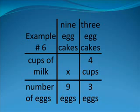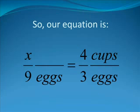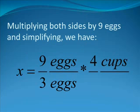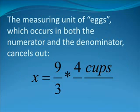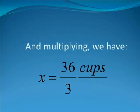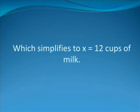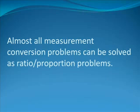Now, on your screen, you should see how this problem should be set up in tic-tac-toe board format. In the lower right-hand corner, again, we have our equation. We write it as X divided by nine eggs is equal to four cups divided by three eggs. The measuring unit of eggs, which occurs in both the numerator and the denominator, cancels out. At first, we have X equal to nine eggs times four cups divided by three eggs, once we multiply both sides by nine eggs. The eggs cancel out, and we are left with X is equal to nine times four cups divided by three. And multiplying, we have X equal to 36 cups divided by three, which simplifies to X equal to 12 cups of milk.